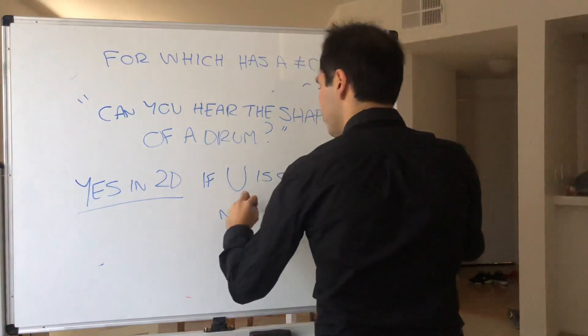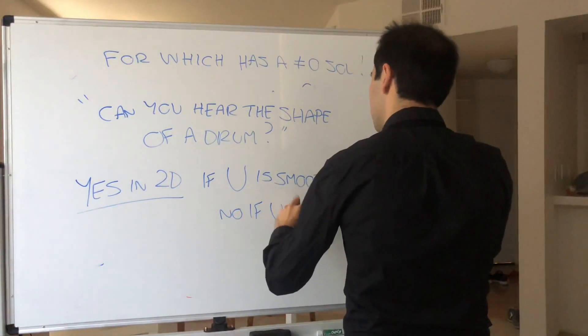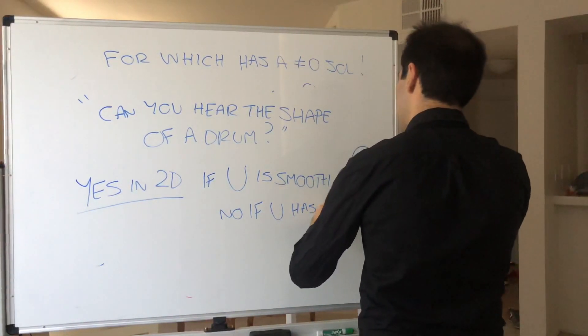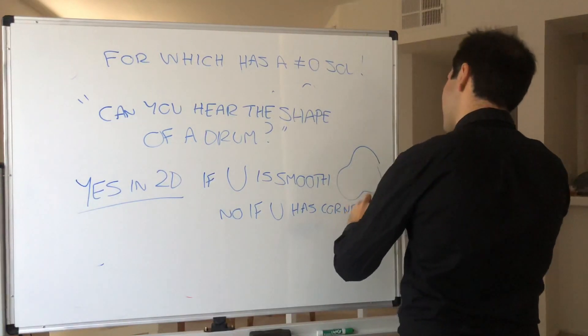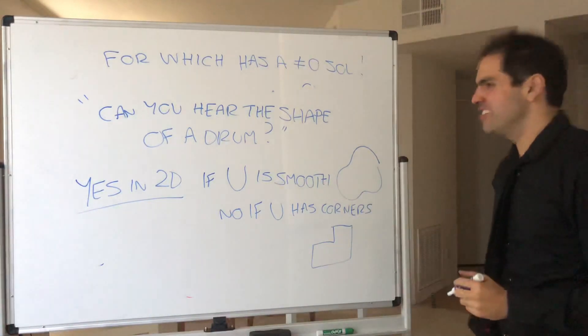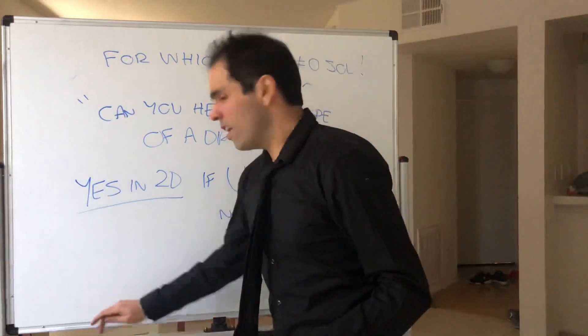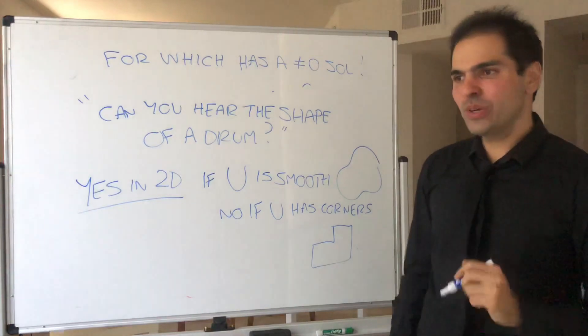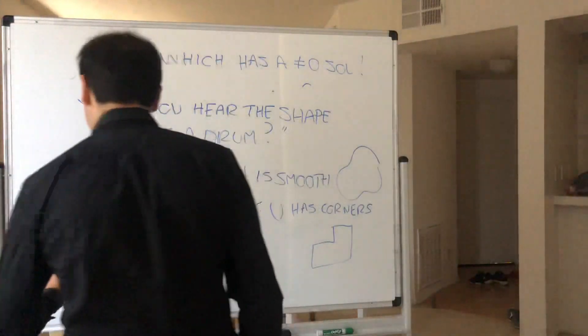So like this. And then no, if U has corners. Like this. This you cannot recover just from hearing the eigenvalues. And what about higher dimensions?